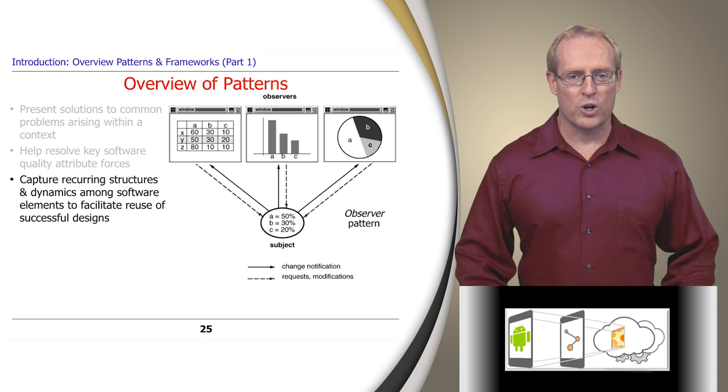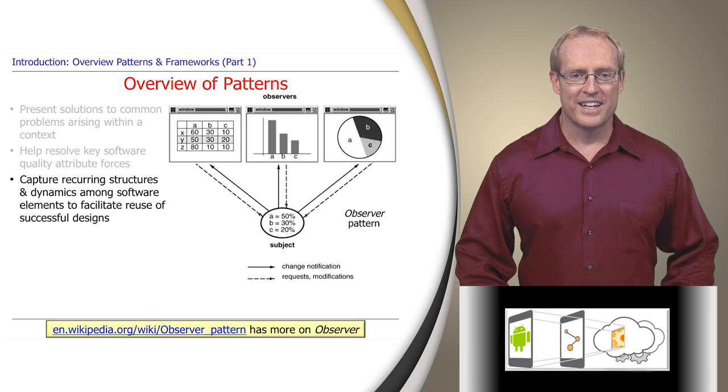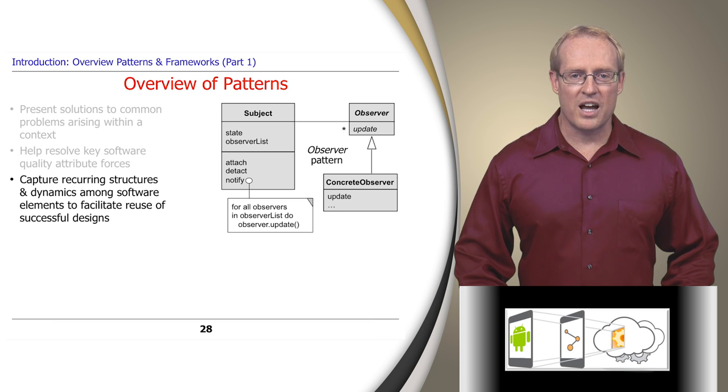Patterns also capture recurring structures and dynamics among software elements, thereby enabling reuse of successful designs and implementation techniques. For example, Observer is a common pattern that defines a one-to-many dependency between objects, so that when one object changes, all objects that depend on it are automatically notified and updated, as described at this link. This diagram depicts the canonical structure of the Observer pattern, which has a subject that's associated with an AbstractObserver base class, which in turn is subclassed by concrete observers.